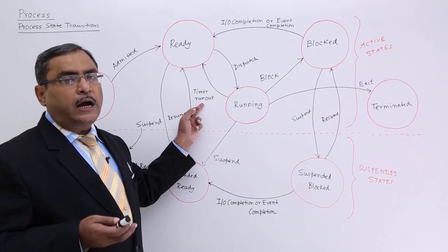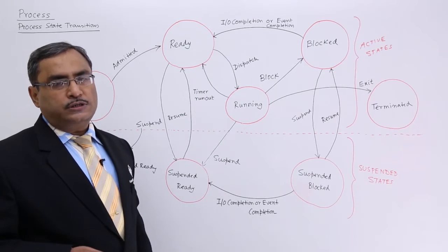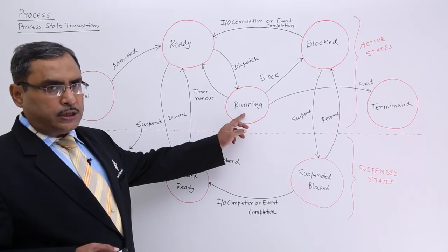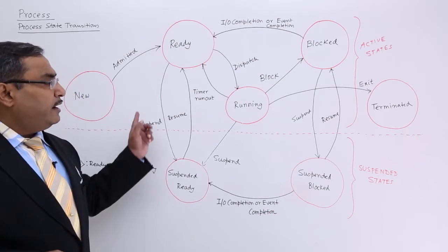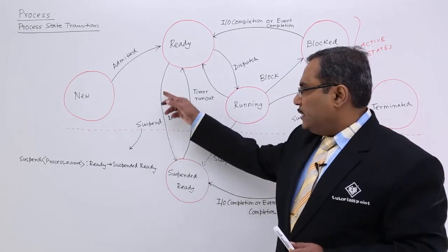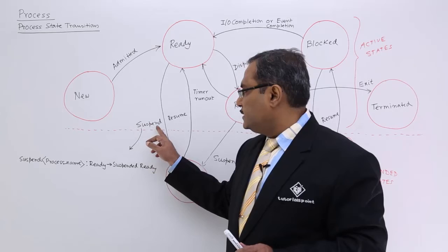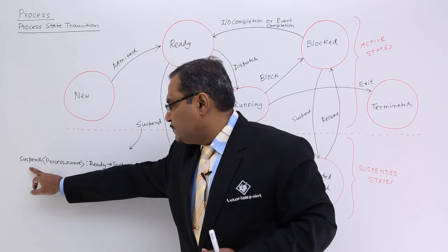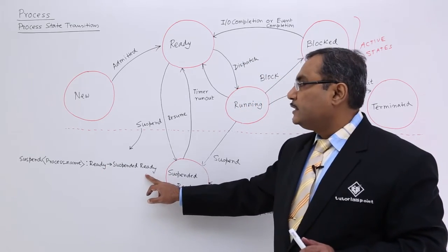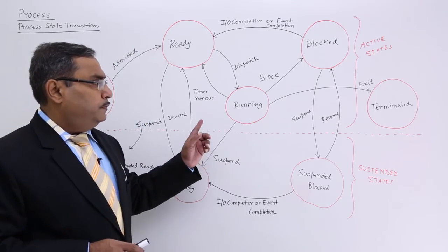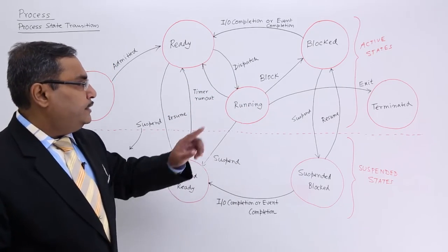Timer run out also occurs when a higher priority process arrives — the current lower priority process goes to the ready queue and the higher priority process takes over the CPU. During the running state, the process can also be terminated through exit. Each state transition can be written in a specific notation; for example, the suspend operation on a process causes a transition from the ready state to the suspended ready state. This diagram puts all states in separate blocks with all transitions noted.